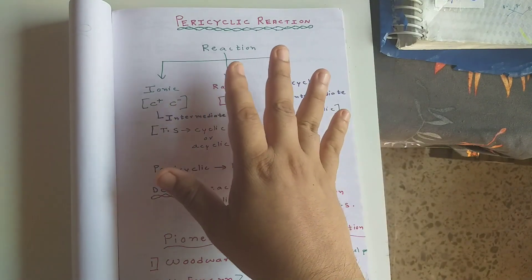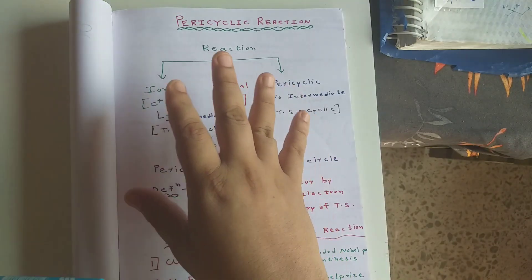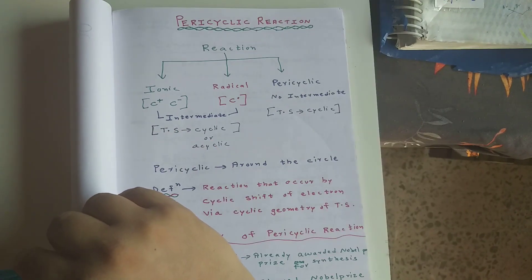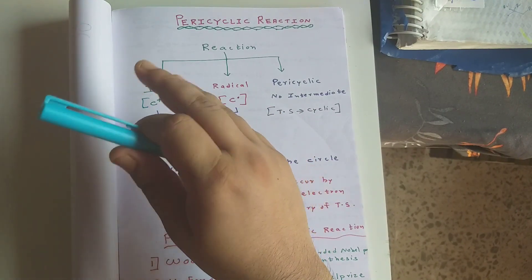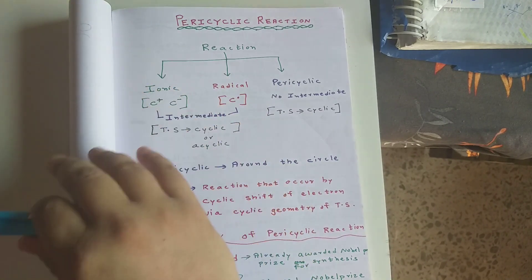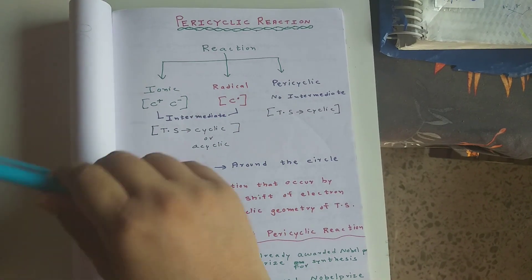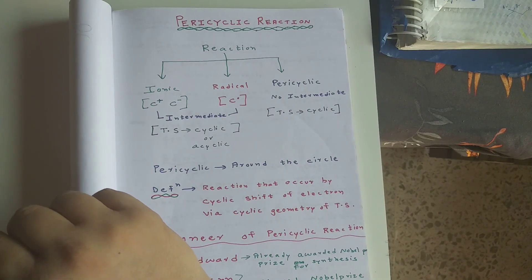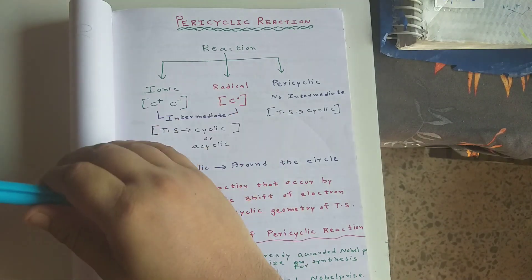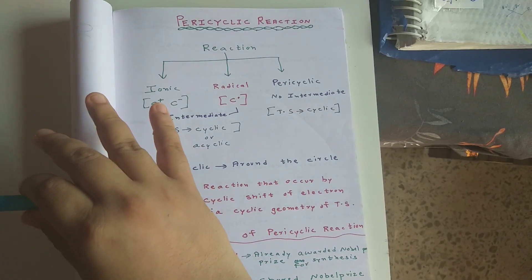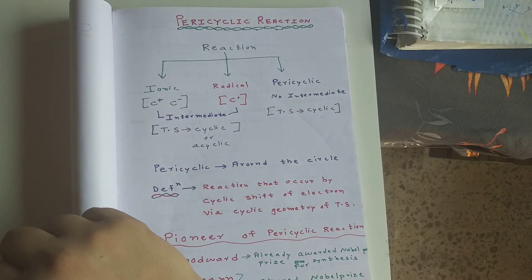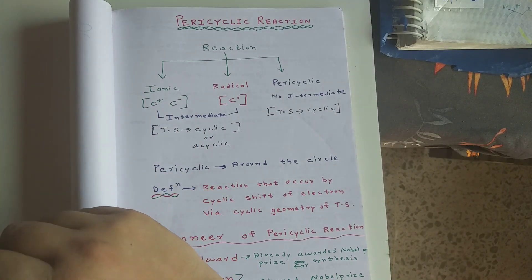Today we will be discussing the first part of pericyclic reactions, where I am discussing the introduction and characteristics of pericyclic reactions. In the second part, we will discuss molecular orbitals and symmetry. From the third part onwards, we will start electrocyclic reactions. The first two lectures cover only the basics and background of pericyclic reactions; after that, we will start the actual reactions.